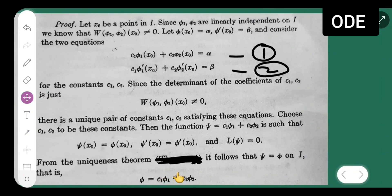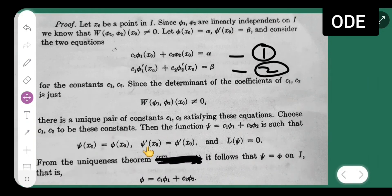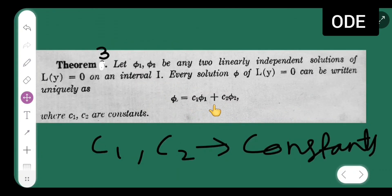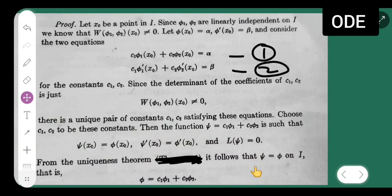Therefore phi = c1·phi 1 + c2·phi 2, which is exactly what we needed to prove. We took the function psi such that psi(x₀) = phi(x₀), psi'(x₀) = phi'(x₀), and L(psi) = 0, and by the uniqueness theorem this holds on all of interval I. So every solution can indeed be written in this linear combination form.